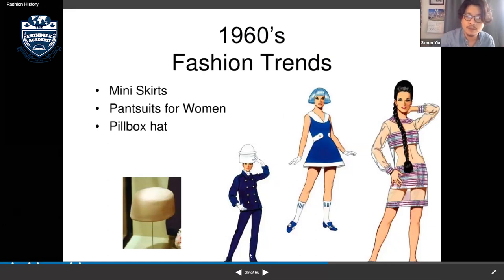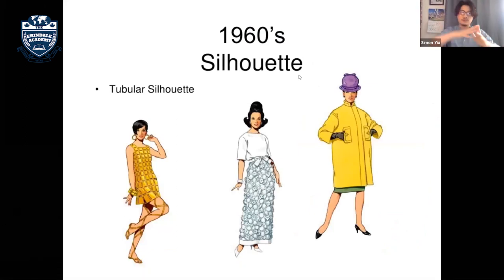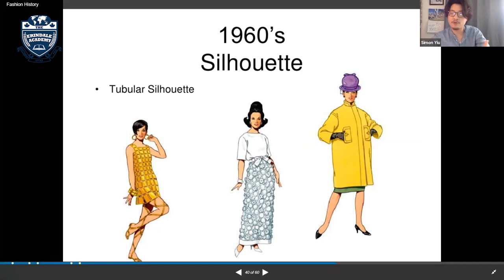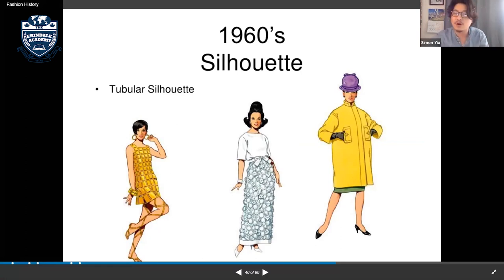Fashion always cycles, and in the 1960s the tubular silhouette came back — previously seen in the 1930s. More vibrant colors appeared, hemlines went higher, and different hairstyles accompanied this rectangular, tubular shape.